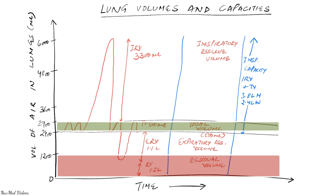Next is the functional residual capacity, or FRC. It's based on the expiratory volumes and follows the same concept as inspiratory capacity. FRC is the sum of expiratory reserve volume plus residual volume. Functional residual capacity is about 2.4 liters in men and about 1.8 liters in women.